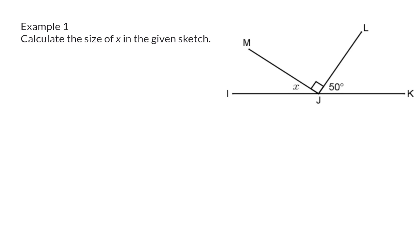Example 1: Calculate the size of x in the given sketch. Looking at this sketch, we can see that these three angles form a straight line and should therefore add up to 180 degrees. But we are also given that the angle in the middle is exactly 90 degrees.